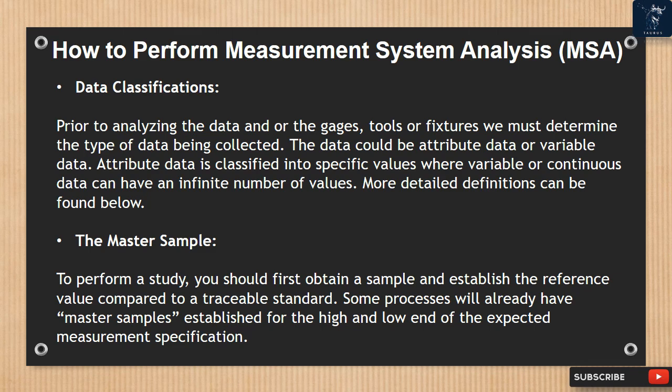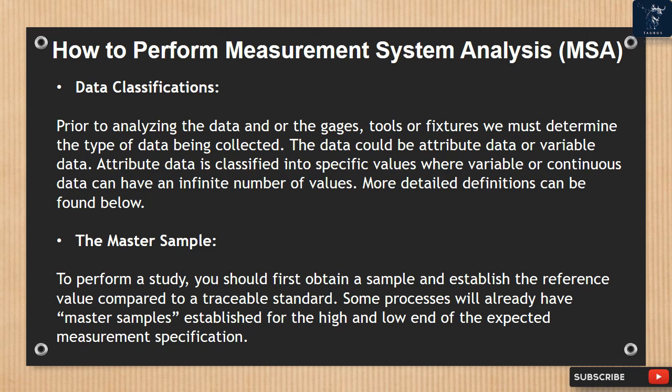Data classifications. Prior to analyzing the data and the gauges, tools, or fixtures, we must determine the type of data being collected. The data could be attribute data or variable data. Attribute data is classified into specific values, where variable or continuous data can have an infinite number of values. The master sample: to perform a study, you should first obtain a sample and establish the reference value compared to a traceable standard. Some processes will already have master samples established for the high and low end of the expected measurement specification.